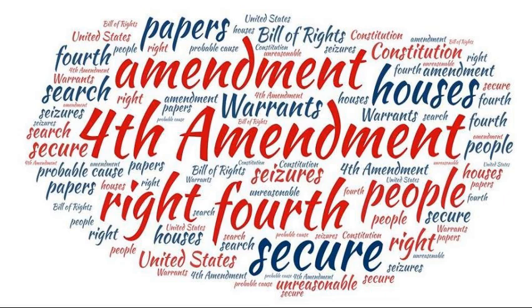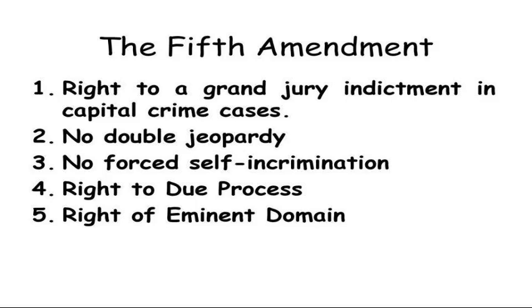The next four amendments lay out the rights and protections that apply to people accused of crimes or involved in other legal disputes. The Fifth Amendment is the longest amendment in the Bill of Rights and lists five important rights. First, it gives people accused of serious crimes the right to a grand jury hearing. Second, it protects citizens from double jeopardy — a person found not guilty cannot be tried again for the same crime. Third, it prohibits self-incrimination, meaning police cannot force people to say things that might be used against them in a trial.